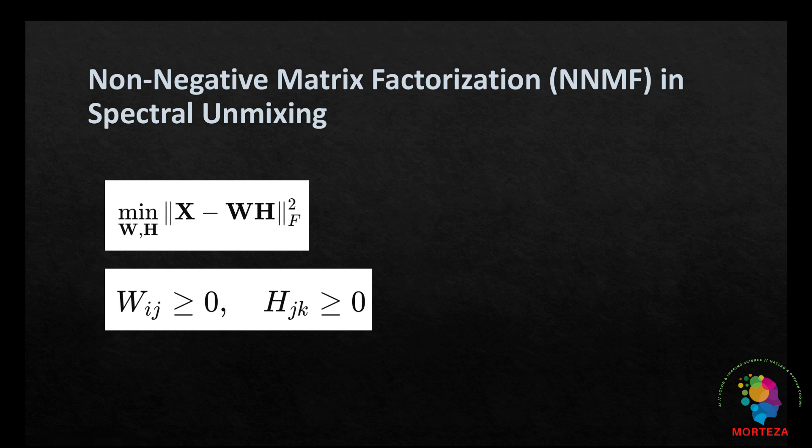So we first randomly initialize matrices W and H with non-negative values. And then we update W and H iteratively to minimize the reconstruction error as shown here. And then we converge when the error reaches a minimum yielding the final abundance and endmember matrices.